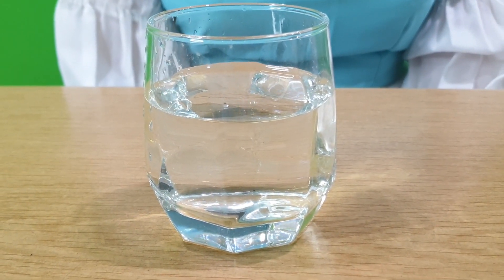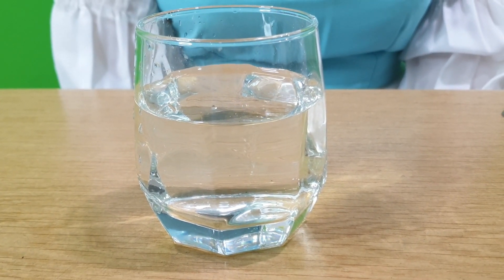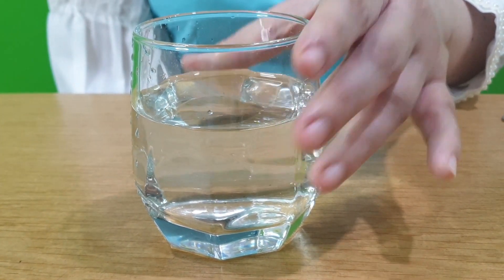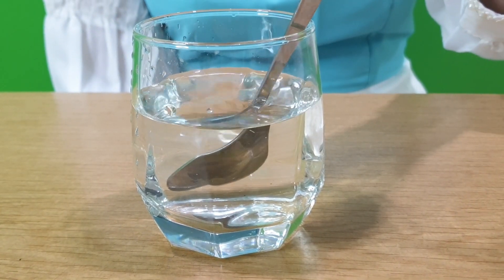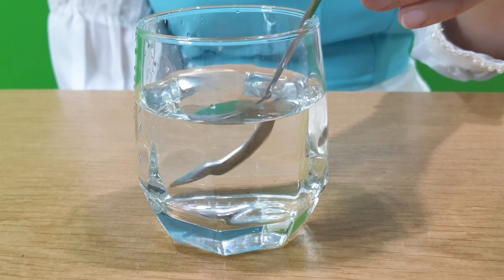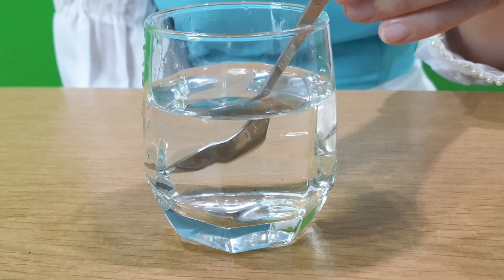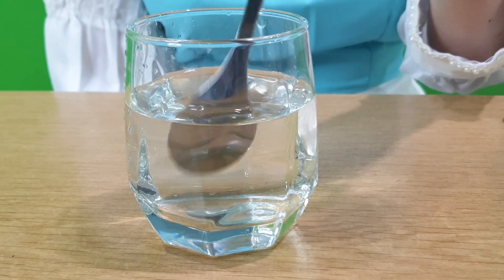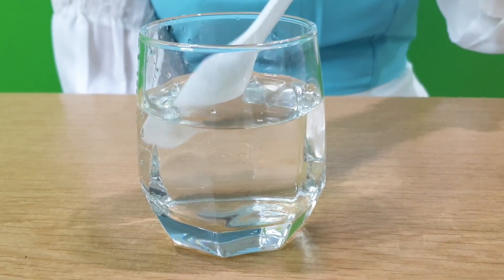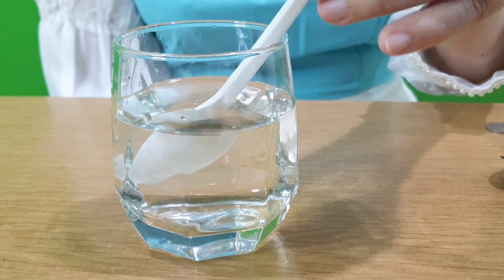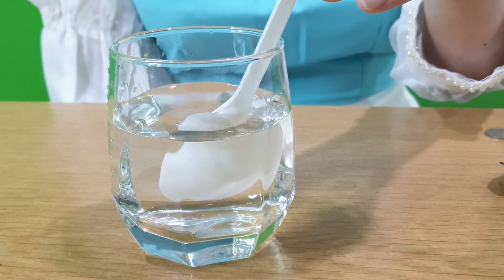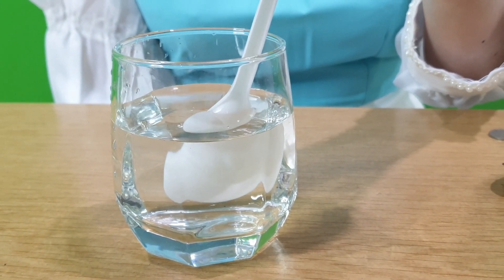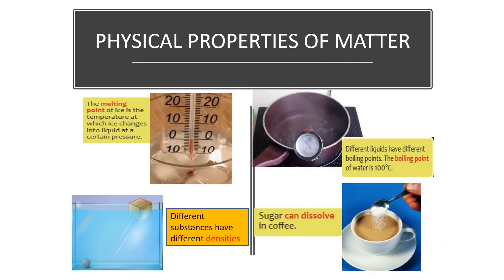Another example of physical property is heat conductivity. With a glass of hot water, if I place a metal spoon inside and feel it with my hand, I can feel that the spoon is hot because a metal spoon is a heat conductor. If I place a plastic spoon inside, I can't feel the heat because plastic is an insulator of heat. Other examples of physical properties are melting point, boiling point, density, and solubility.